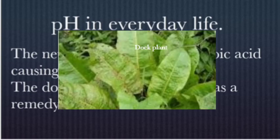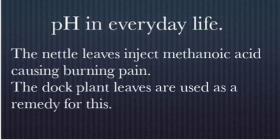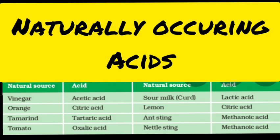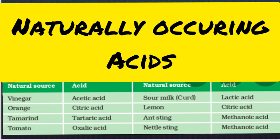Dock plant leaves are used as a remedy — they are alkaline in nature, so rubbing them on the affected area neutralizes the injected acid and relieves the pain. These are some naturally occurring acids; learn a few of their names as it will be useful.